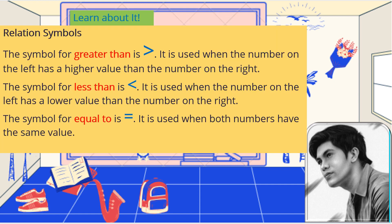The symbol for greater than — that's the one that looks like a sideways letter V, like a fish whose mouth is facing the left. That is the symbol for greater than. It is used when the number on the left has a higher value than the number on the right.